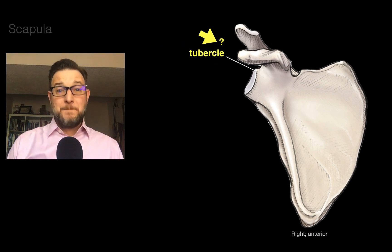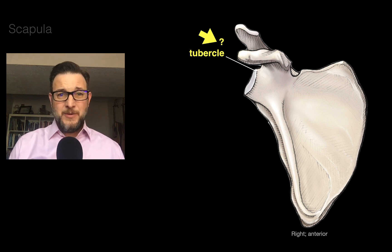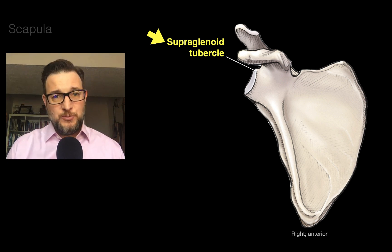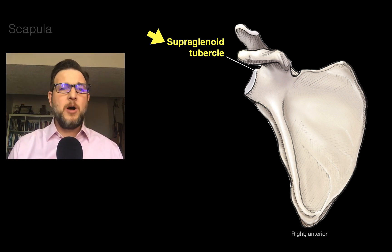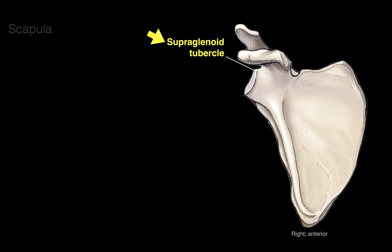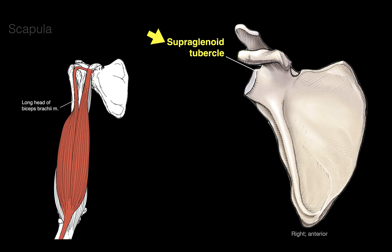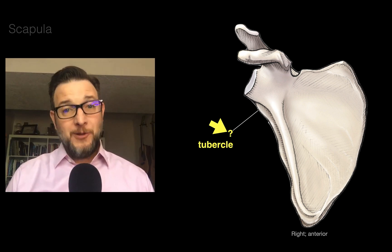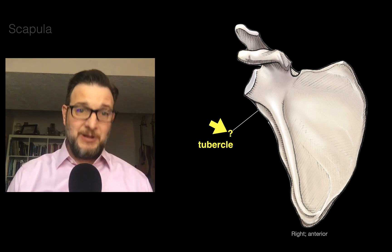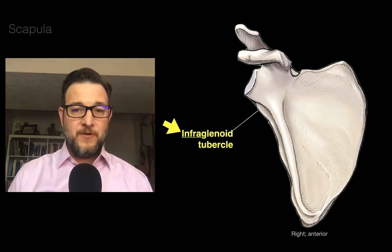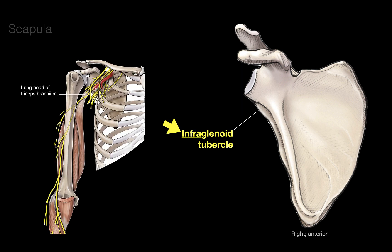The tubercle above the glenoid cavity is called the supraglenoid tubercle. A tubercle is a bony prominence usually for muscle or ligament attachment. The supraglenoid tubercle is the attachment point for the long head of the biceps brachii muscle. The tubercle below the glenoid cavity is called the infraglenoid tubercle, and this is the bony prominence where the long head of the triceps brachii muscle attaches.